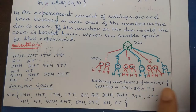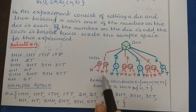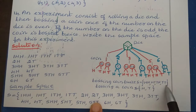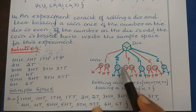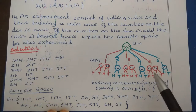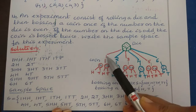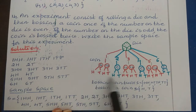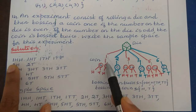Before writing the outcomes, let us note that tossing a coin twice gives 4 possibilities: HH, HT, TH, TT, and tossing a coin once gives 2 possibilities: H and T. Now if we get number 1 on the die, which is odd, we toss a coin twice, giving 4 possibilities. So with number 1 we have: (1,HH), (1,HT), (1,TH), (1,TT).